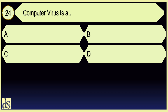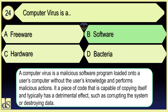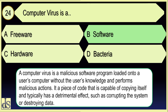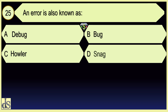Computer virus is a Software. An error is also known as a Bug.